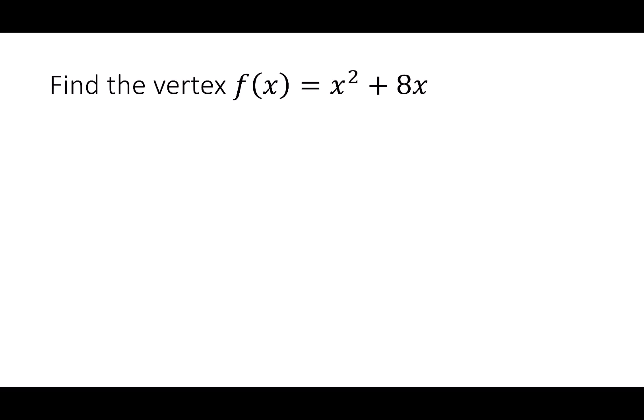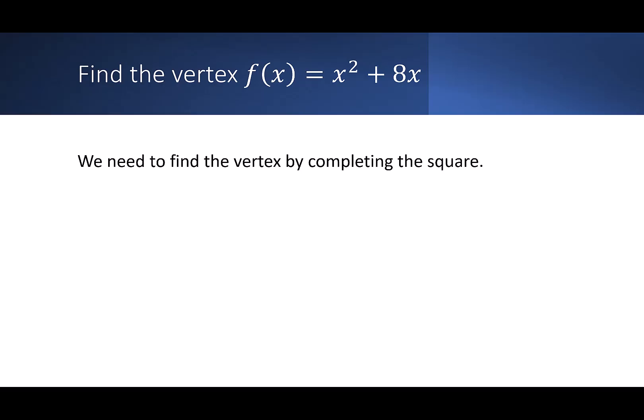I do know when I find the vertex, it will be a minimum because the coefficient of x² is a positive 1. So we're going to do this twice. We're going to do it a long way to establish what we're doing, and then I'm going to teach you a shortcut.